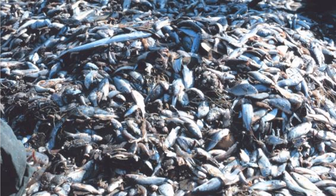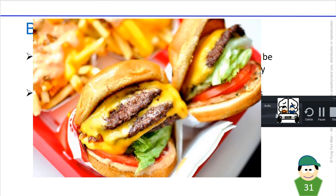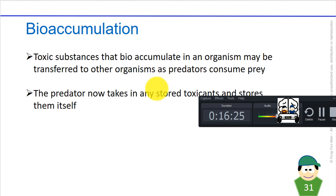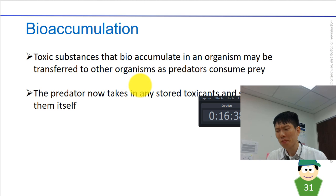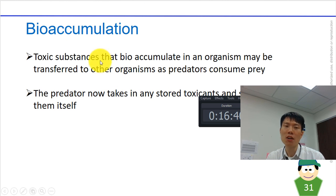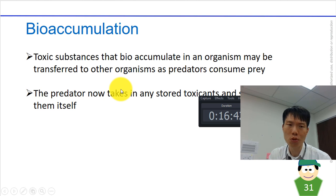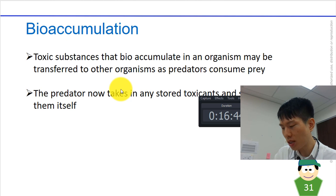Because predators consume prey, when one organism consumes another, the predator takes in any stored toxicants and stores them in itself. So when you eat an organism, you carry the good things — the proteins, fats, and sugars — but you also bring along whatever toxins are present. This is one justification some people use for going vegan or eating vegetables only.